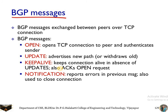The BGP messages exchanged between peers are: Open, which opens the TCP connection between peers and sends authentication messages between sender and receiver. Update, which advertises a new path to neighbors and updates routing information. Keep-alive, which keeps the connection alive for a certain amount of time and also accepts acknowledgements. Notification, which reports errors in the previous message and closes the connection.